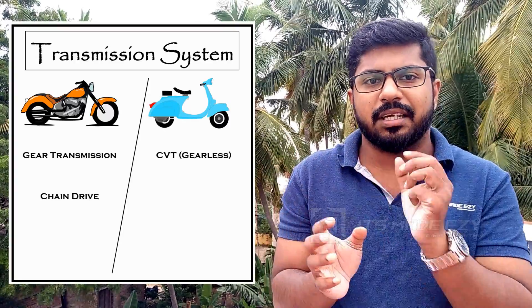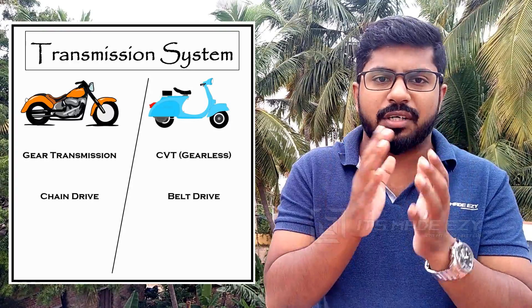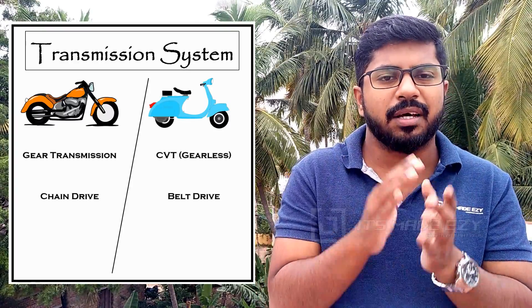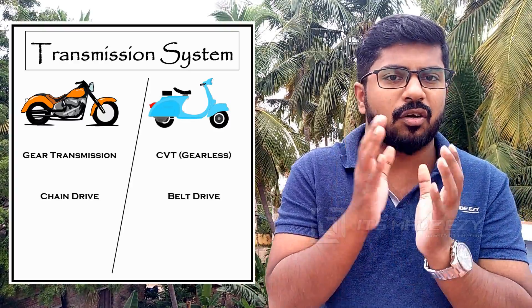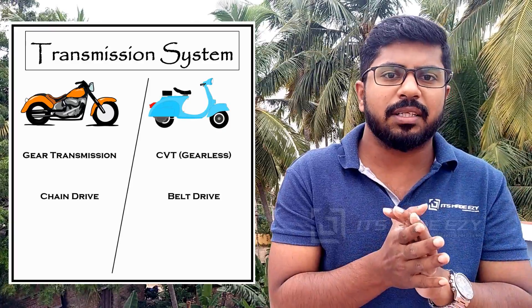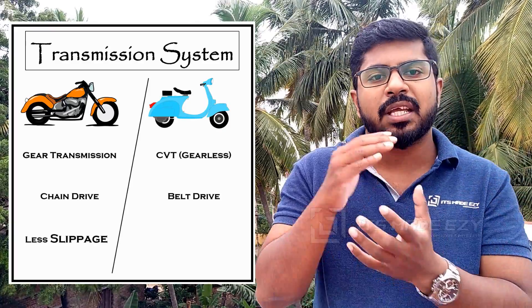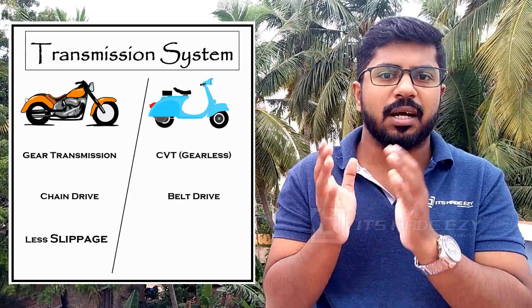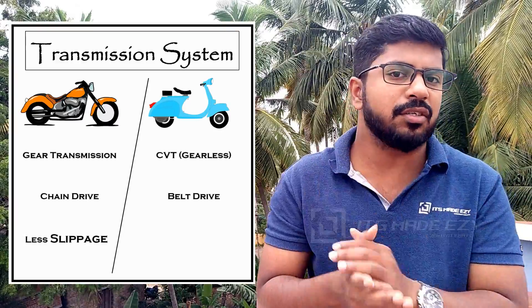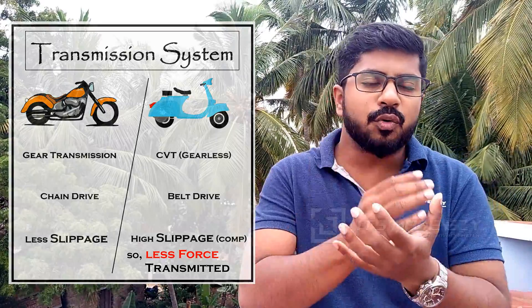For the belt drive system, there are slippage losses. For the chain drive system, the slippage loss is low. For the belt drive system, there are slippage losses. For the scooter engine, we can transfer power to the wheel efficiently.